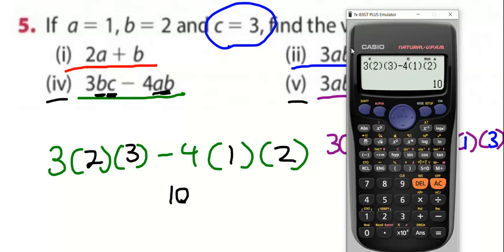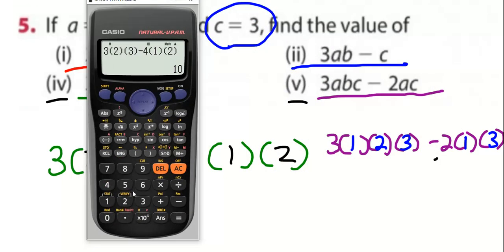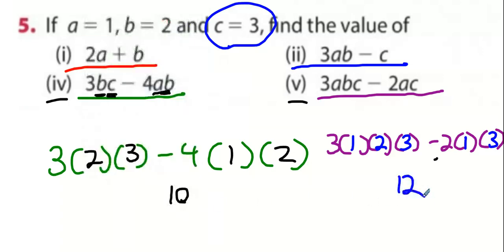We go to the calculator and we're doing the purple question now. We're doing three bracket one bracket two bracket three. Take away two bracket one bracket three. We get 12. Everybody happy with 12?